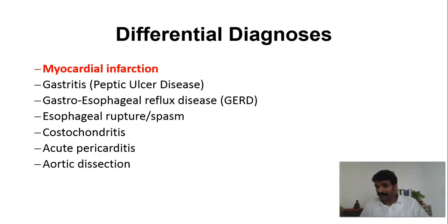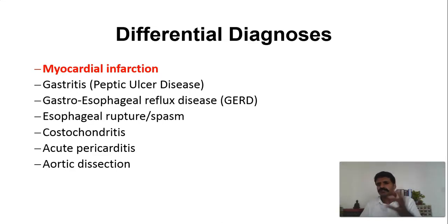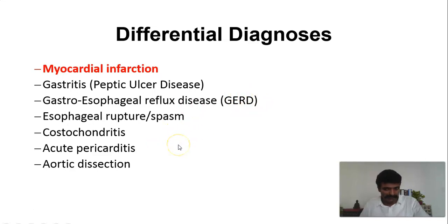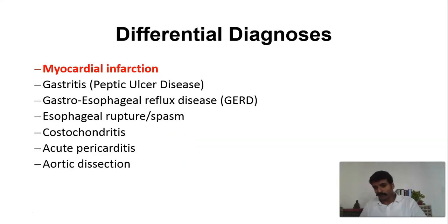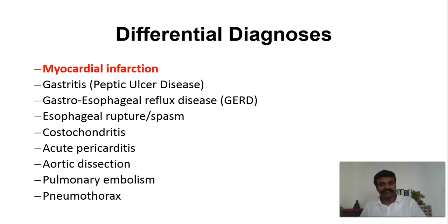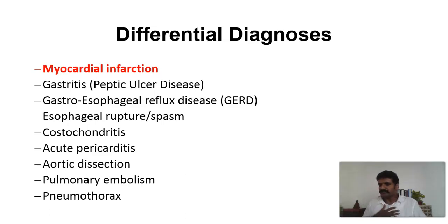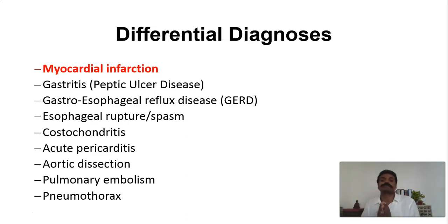If you do suspect aortic dissection — a pain that is worsening, a crescendo kind of pain radiating to the back — you might even need to rule it out using an echocardiogram. Lung conditions can also mimic it. Very classically, pulmonary thromboembolism and pneumothorax can mimic this condition. So myocardial infarction is not the only condition that can present this way, but that should be your first priority — you should rule out myocardial infarction.